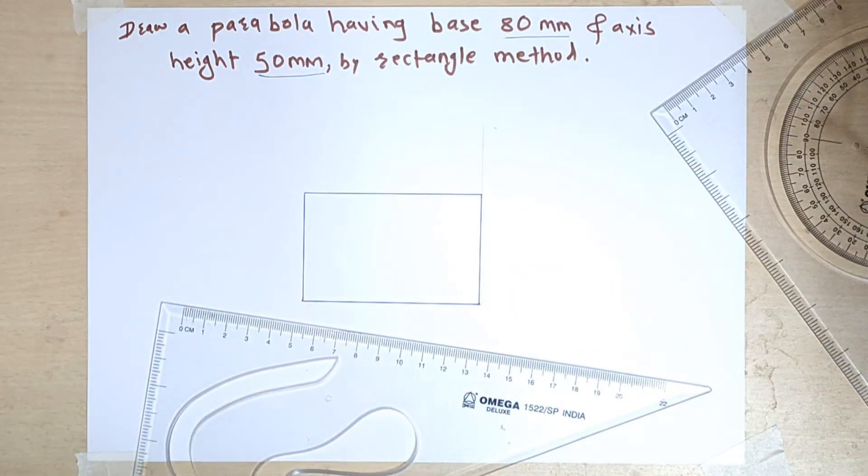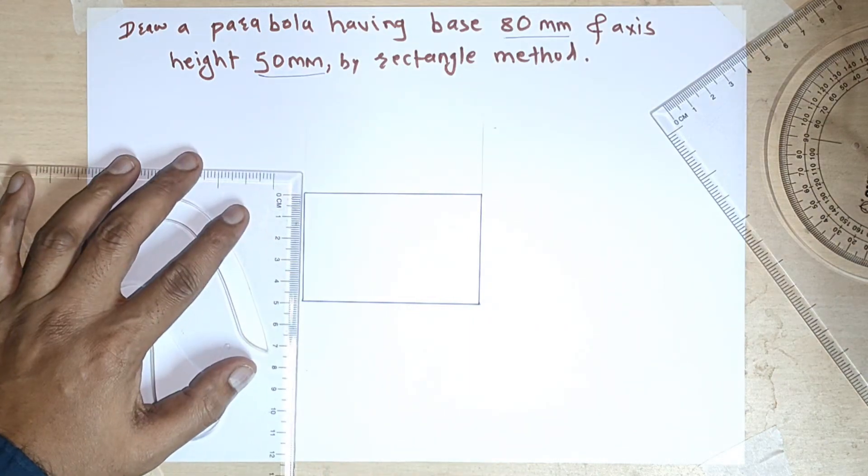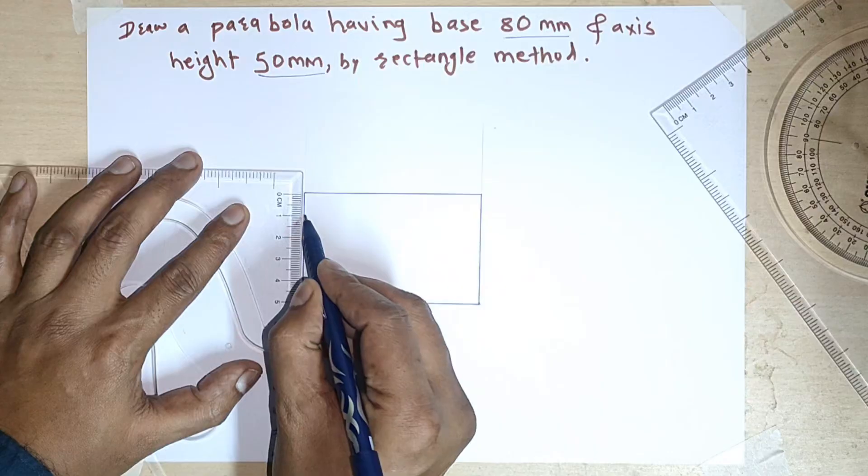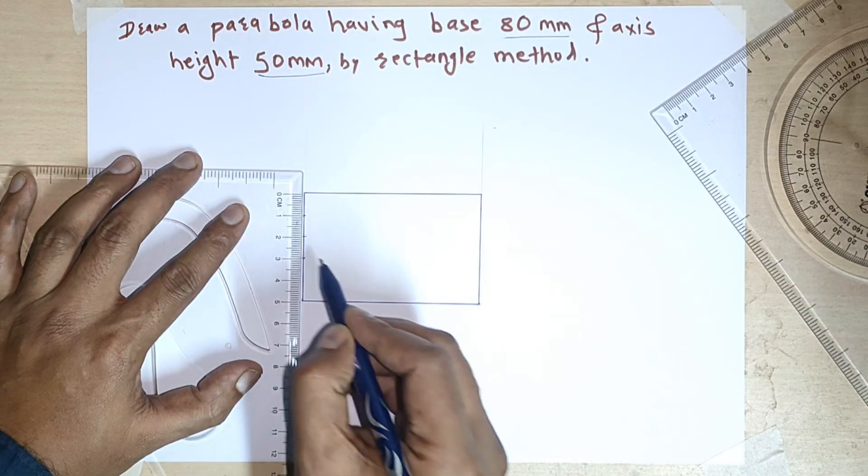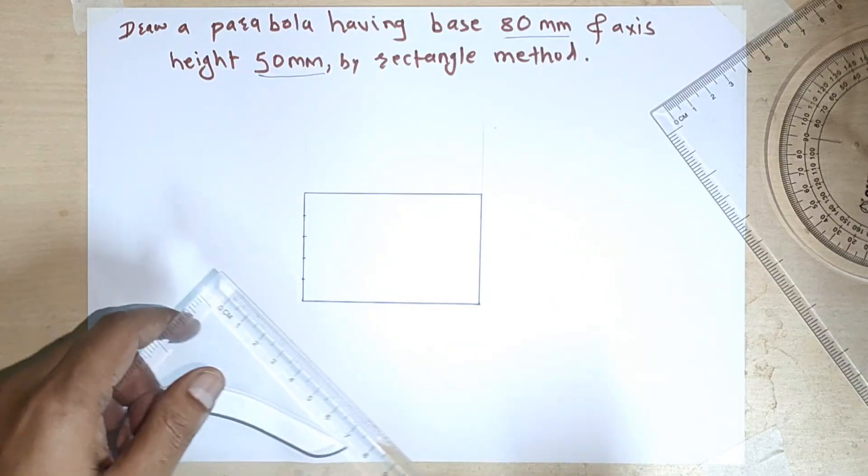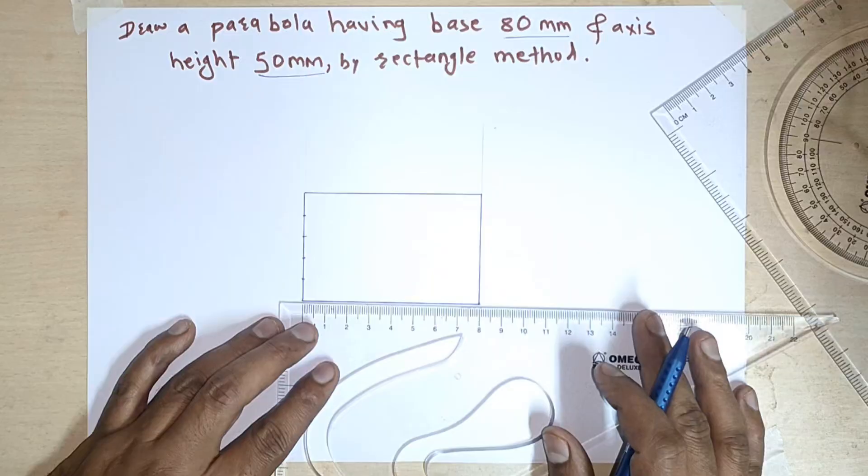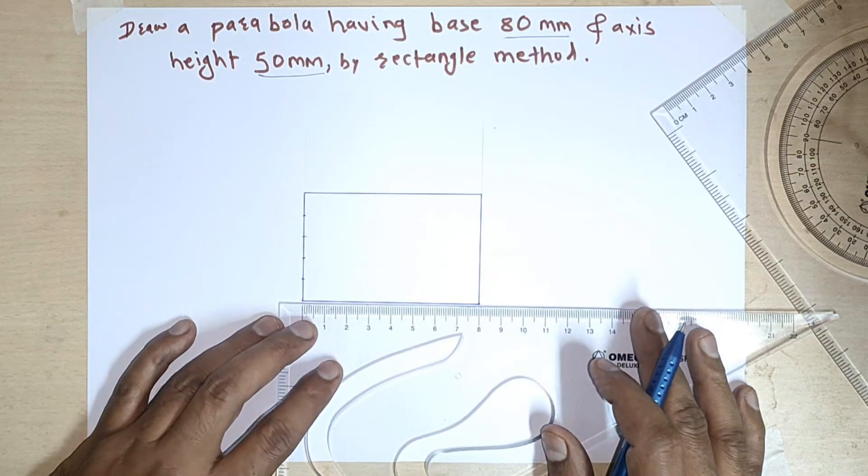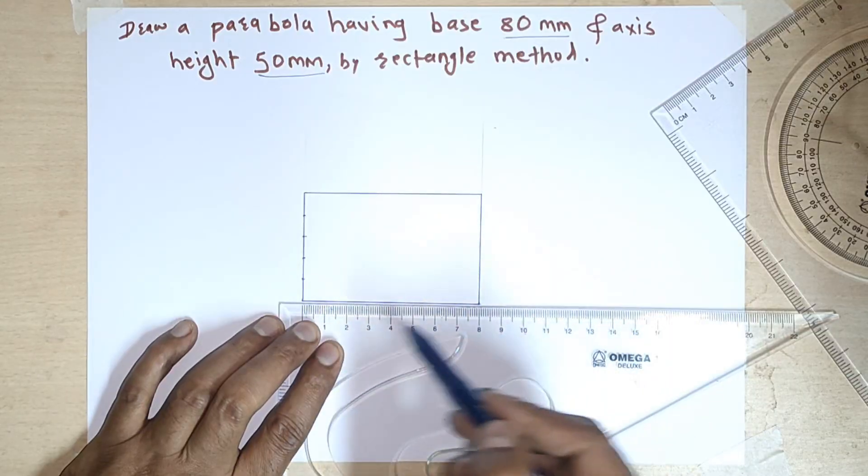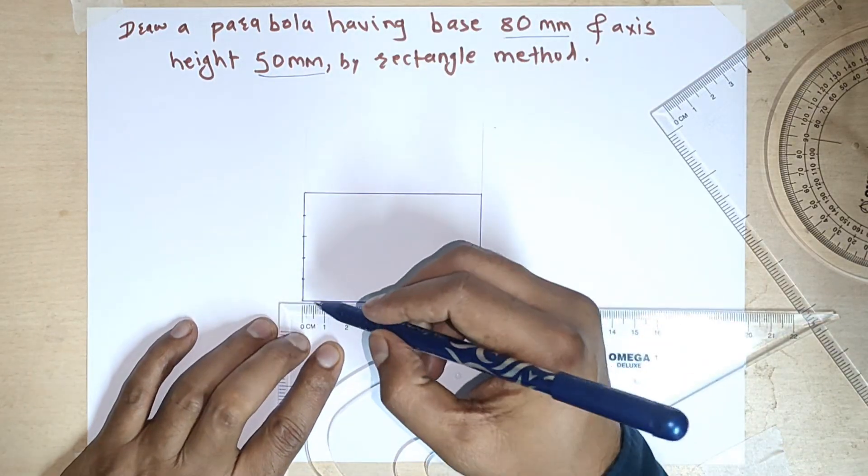So this is the rectangle of 80 by 50. Now we are marking the 5 points on height because we can easily divide this 50 mm into 5 parts. Now similarly we are dividing this 80 mm into 10 parts. These are the 5 parts and these are the 10 parts. So for 10 we have to take 8 mm.